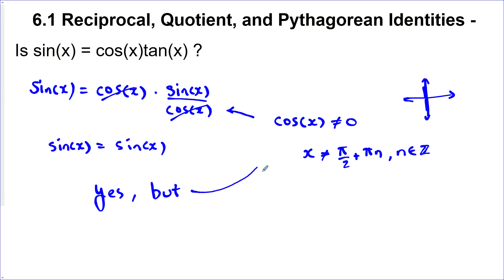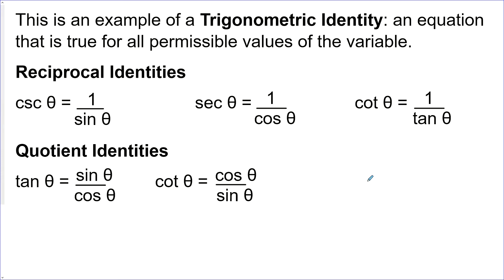But x cannot equal those values, and besides those values, everywhere else they will be equal. That was an example of a trigonometric identity — that's an equation that's true for all the permissible values of the variable. We have some reciprocal identities, which we've already seen when we first introduced cosecant theta, secant theta, and cotangent theta. And we have some quotient identities, and we used this one on the first slide.